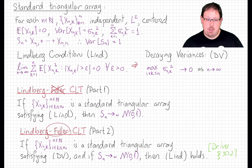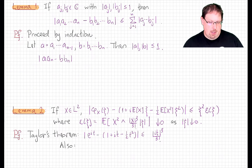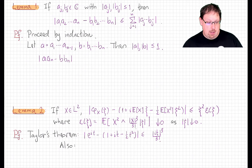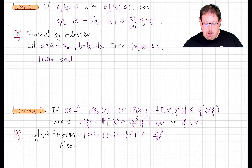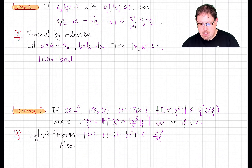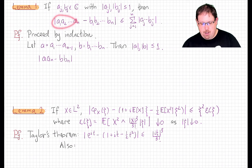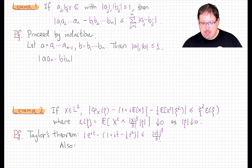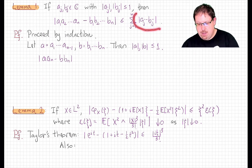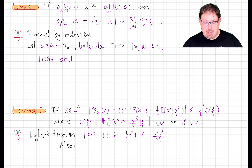We're going to need two very simple lemmas in the calculations to prove Lindbergh's theorem. The first is the following inequality quantifying continuity of large products: if a_1, b_1 through a_n, b_n are all complex numbers of modulus less than or equal to 1 — so all in the unit disk — then the difference between the product of the a's and the product of the b's in modulus is less than or equal to the sum of the distances between the a's and the b's.